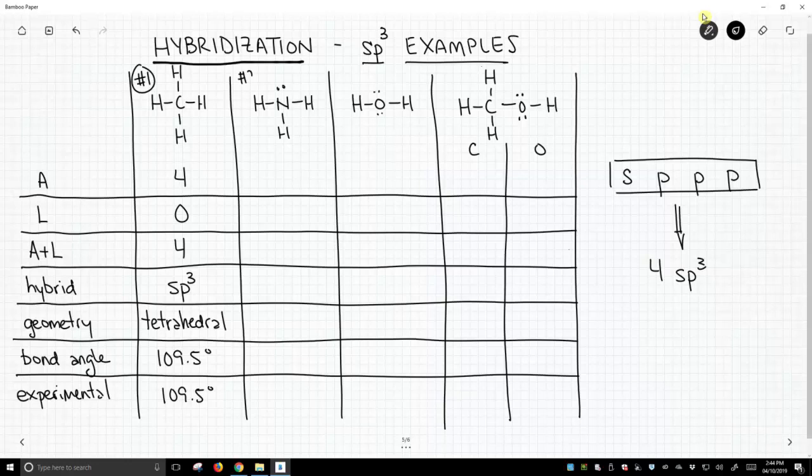Molecule number two is ammonia. Ammonia has nitrogen in the middle. Nitrogen has three attached atoms, three hydrogens. It has one lone pair. A plus L equals four. That leads us to sp3 hybridization. The geometry of an sp3 hybridized atom with three attached atoms is trigonal pyramidal.